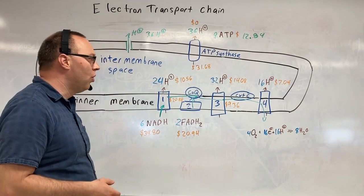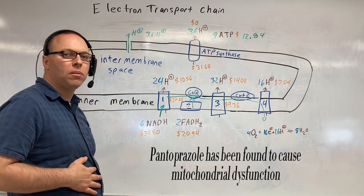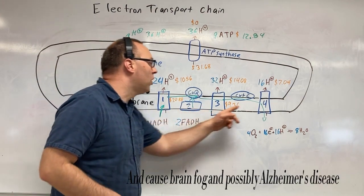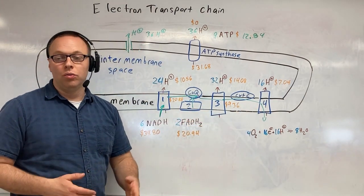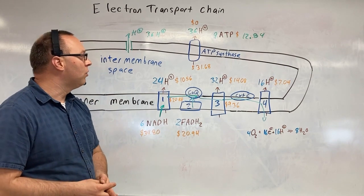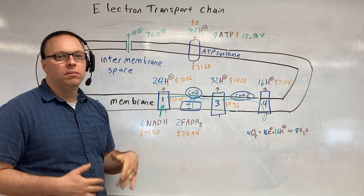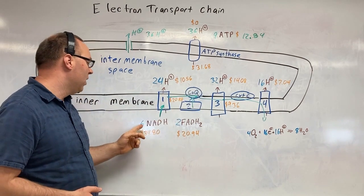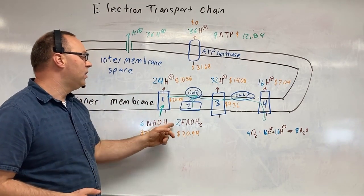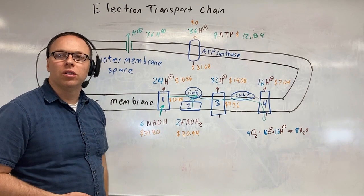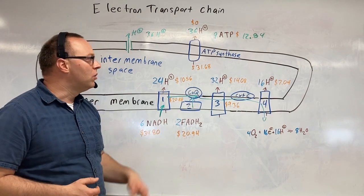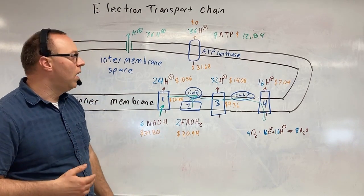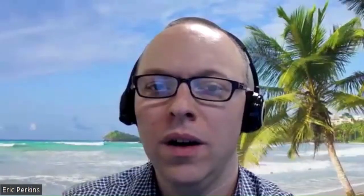Well, I sure hope that pantoprazole could tell the difference between the proton pumps in your stomach and these proton pumps here. So, maybe a side effect of pantoprazole would be sluggishness. Why? Because you cannot move the electrons from NADH and FADH because the pump doesn't work. Because you've gummed it up because you're taking pantoprazole or some sort of proton pump inhibitor.